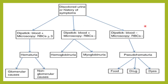So how do we differentiate it? Whenever you get a discolored urine or a patient is telling that he is passing blood in the urine or a dark colored urine, you should always do a dipstick and also correlate it with the microscopy. Suppose you did a dipstick and got blood positive and you examined it under the microscope and got more than three RBCs per high power field — that means the patient is actually having hematuria.